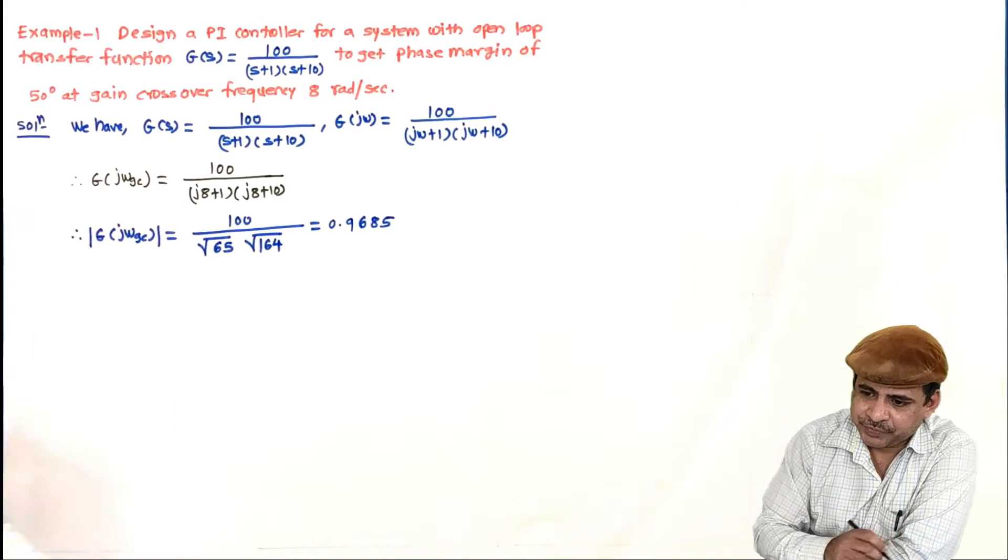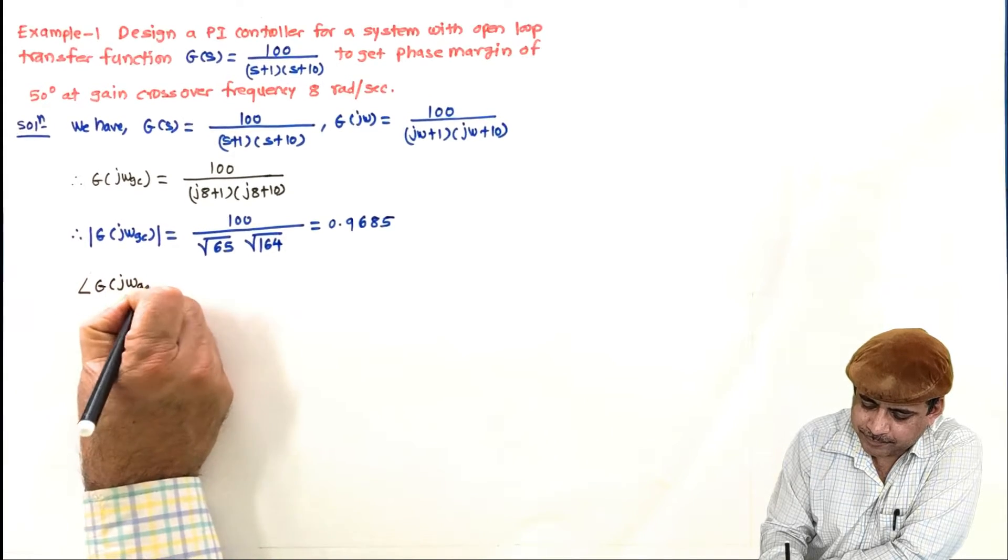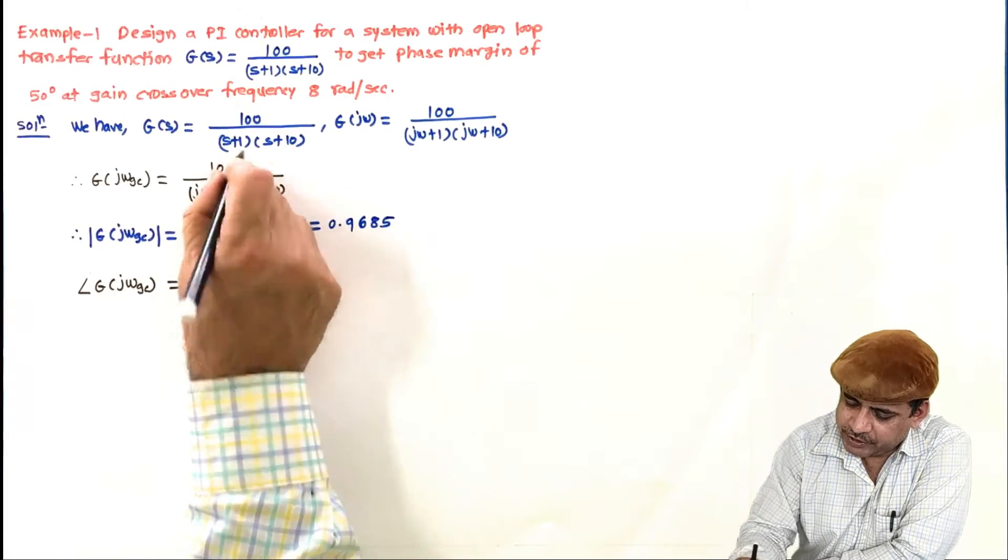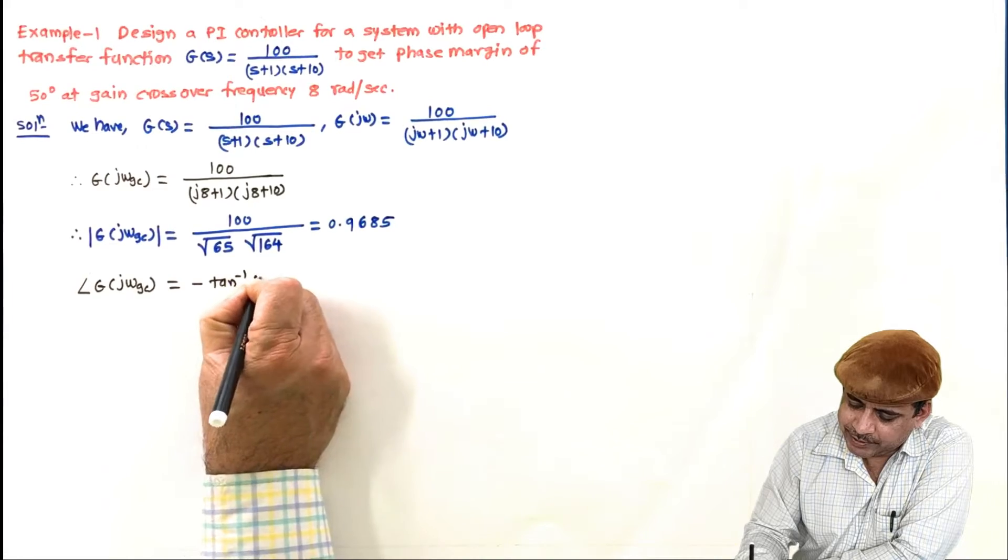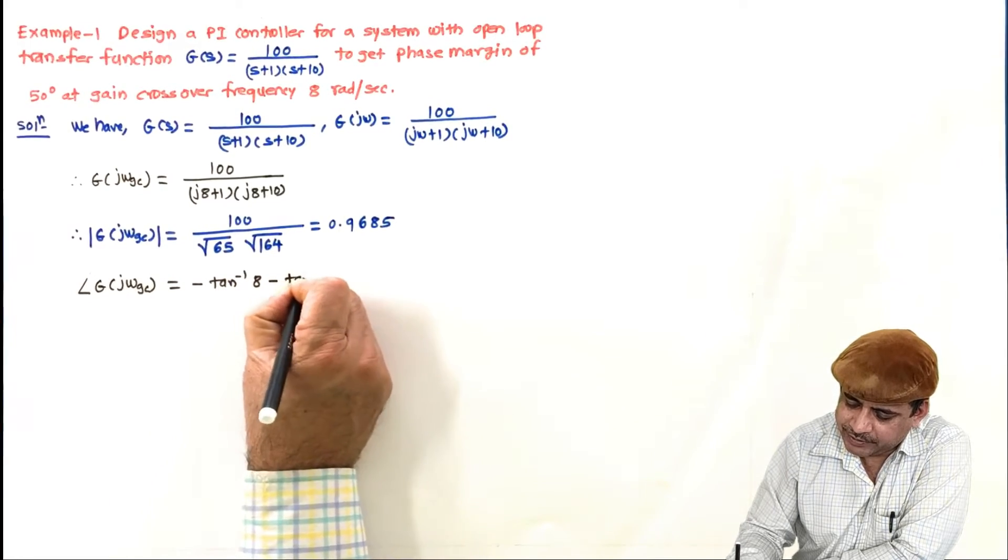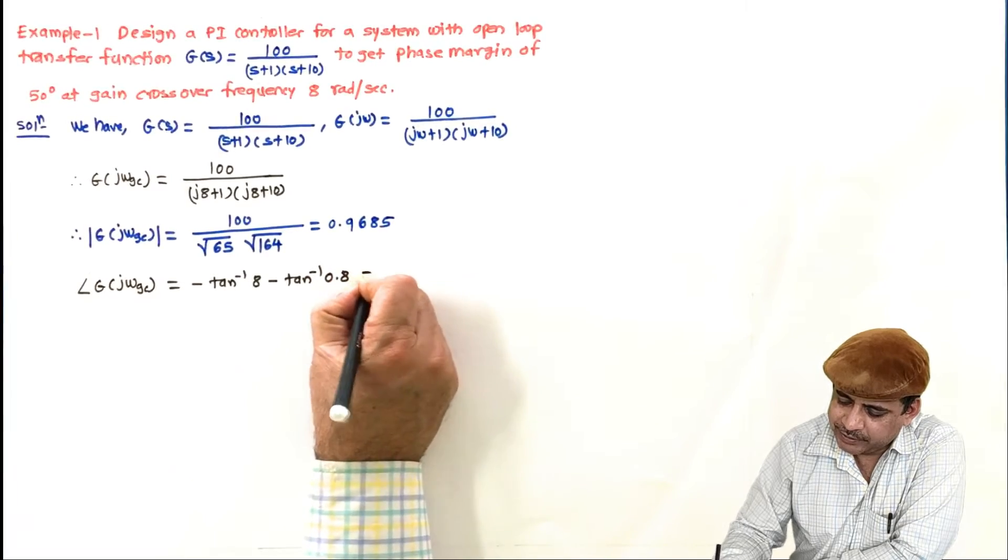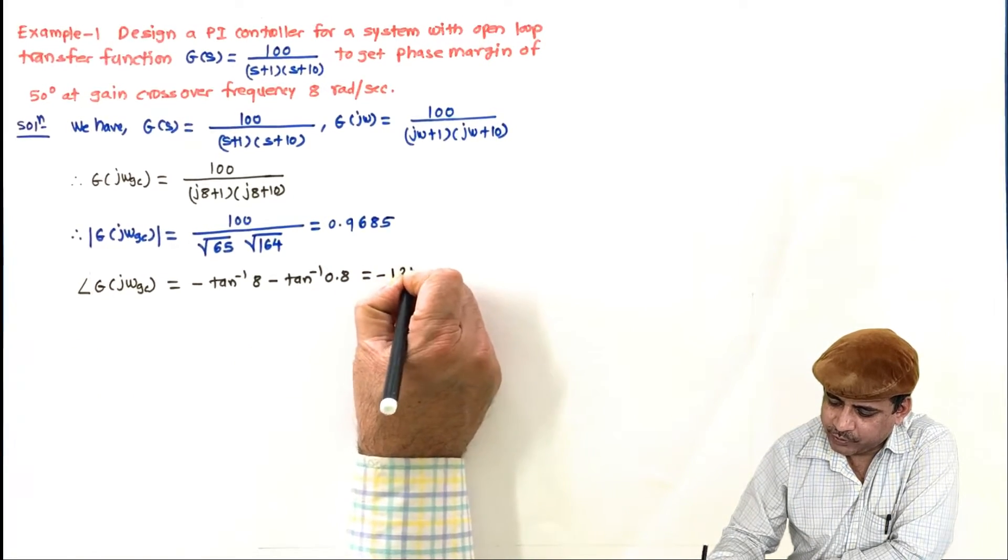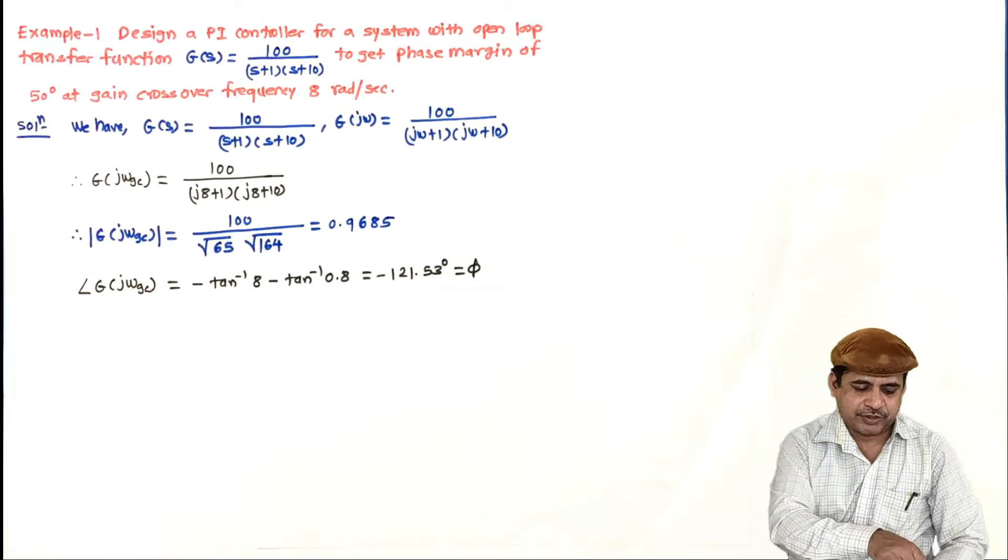And then its angle. So its angle at ωgc is equal to, for this it will be 0, so minus tan inverse of imaginary by real, that is minus tan inverse of 8 minus tan inverse of 8 by 10, which is 0.8, and it is coming minus 121.53 degrees, and this is nothing but φ for our notation.